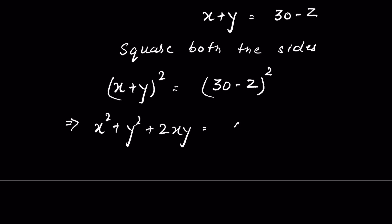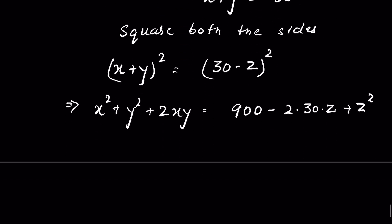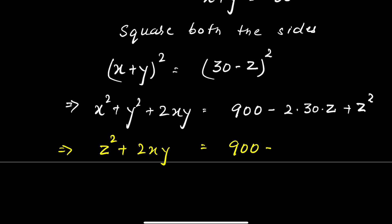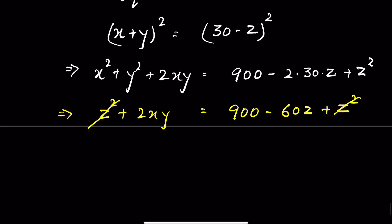So this expands to X squared plus Y squared plus 2XY equals 900 minus 2 times 30 times Z plus Z squared. From the Pythagorean theorem we know Z squared equals X squared plus Y squared. So we can substitute X squared plus Y squared with Z squared, giving Z squared plus 2XY equals 900 minus 60Z plus Z squared. We can now cancel the Z squared terms from both sides.